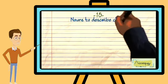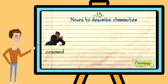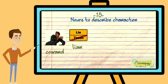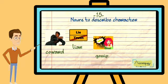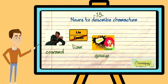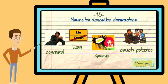And finally, some nouns which we use to describe character and personality. A coward is a person who is afraid of everything. A liar tells lies. A gossip spreads gossip about other people. And a couch potato is a lazy person who doesn't want to do anything.